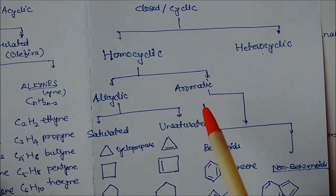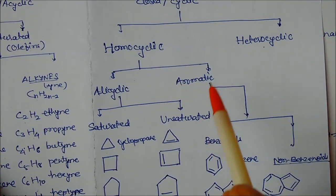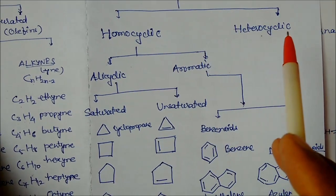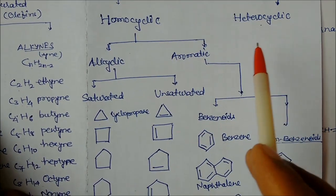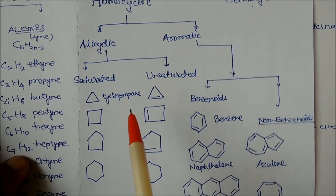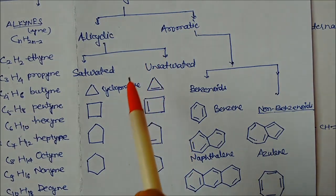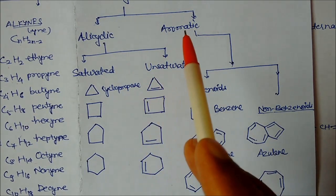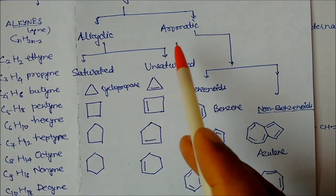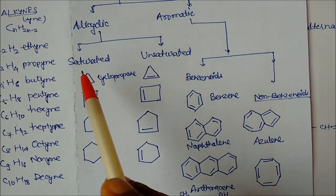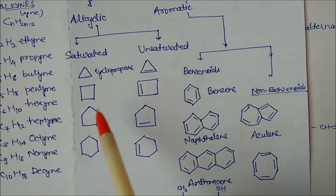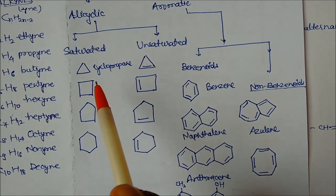Now we will see the closed chain. Closed chain is again divided into two parts: one is called homocyclic and the second is called heterocyclic. Again, homocyclic is of two types: one is alicyclic and the second is aromatic. Alicyclic is further divided into saturated and unsaturated, and here we use bond line notation.